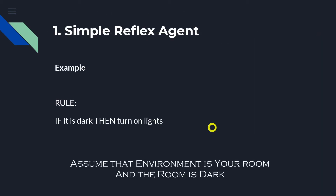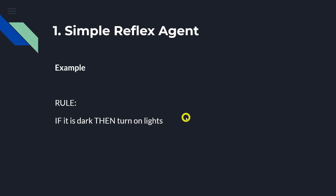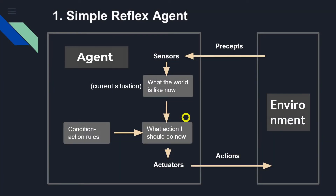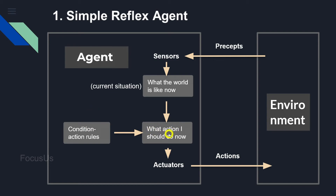Let's look at an example to be more clear. Say there is a simple reflex agent that turns on your lights when it is dark. The rule is: if it is dark, then turn on the lights. Going back to the diagram, the environment is our room. The sensor perceives information from the room and knows the current situation — whether it is dark or not. The condition rule is applied, and since it is dark, the agent knows what action to take: turn on the lights.